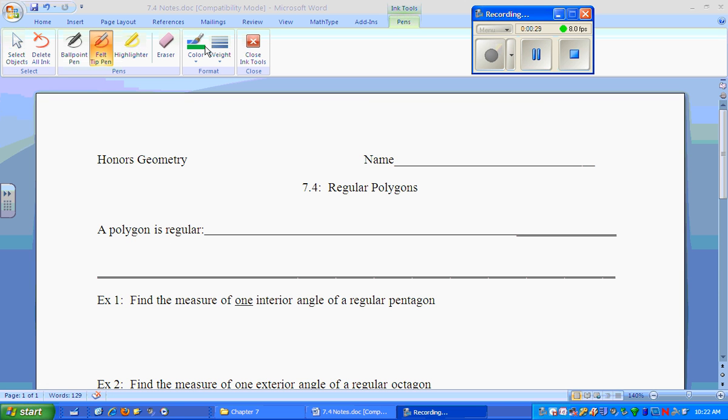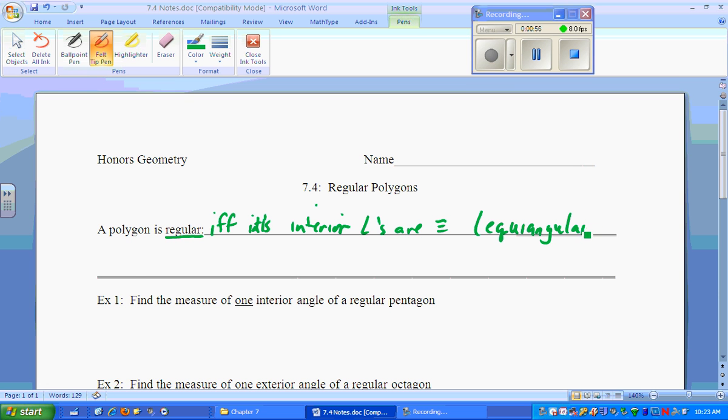Now for the lesson. A polygon is regular if and only if its interior angles are congruent, meaning it would be equiangular, and all its sides are congruent, so it's equilateral.